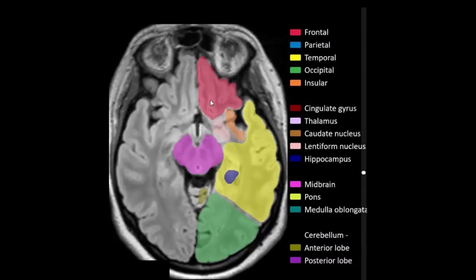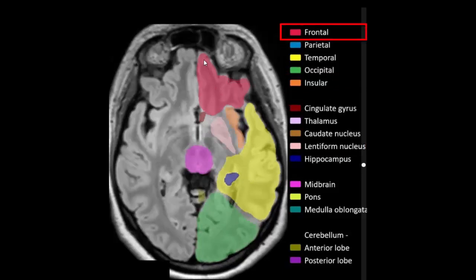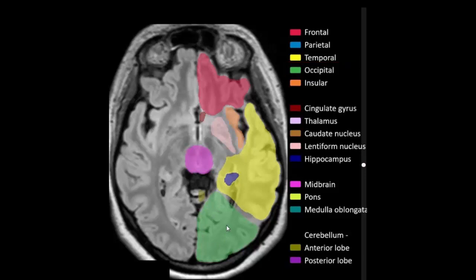Frontal lobe, temporal lobe, hippocampus, occipital lobe, anterior lobe of cerebellum, midbrain, insular cortex, lentiform nucleus. Frontal lobe, temporal lobe, occipital lobe, anterior lobe of cerebellum, midbrain, hippocampus, insular cortex, lentiform nucleus.